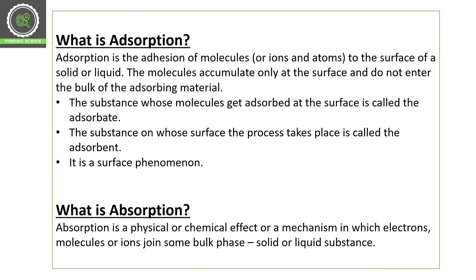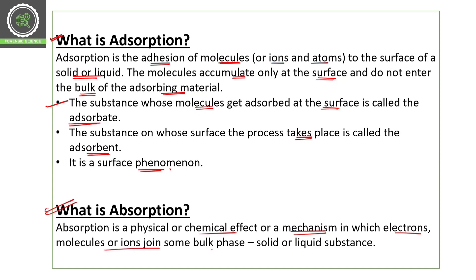Adsorption is the adhesion of molecules, anions, cations, or ions or atoms to the surface of a solid or liquid. The molecules accumulate only at the surface and do not enter the bulk of the adsorbing material — yeh enter nahi karte, sirf adhere hote hain. The substance whose molecules get adsorbed at the surface is called the adsorbate; the substance on whose surface the process takes place is called the adsorbent. It is a surface phenomena. Absorption is a physical and chemical effect or mechanism in which electrons, molecules, or ions join the bulk phase of a substance, either solid or liquid.